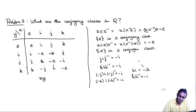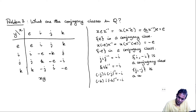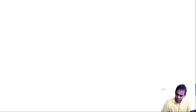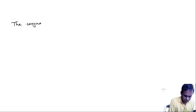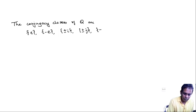So {i, -i} is a conjugacy class. Similarly, {j, -j} is a conjugacy class, and {k, -k} is a conjugacy class — by the same kind of reasoning. The final answer: the conjugacy classes of Q are {e}, {-e}, {±i}, {±j}, and {±k}.